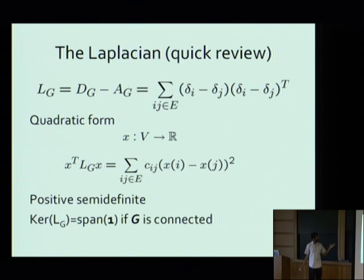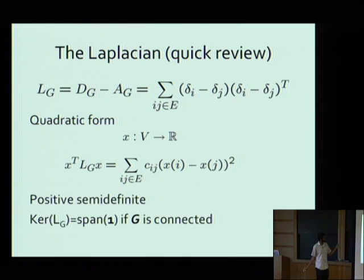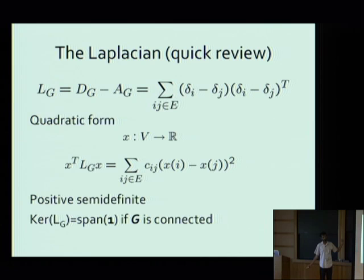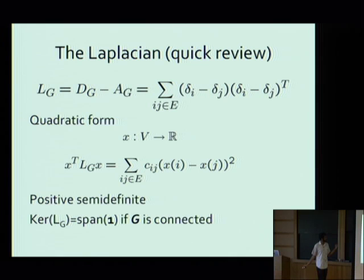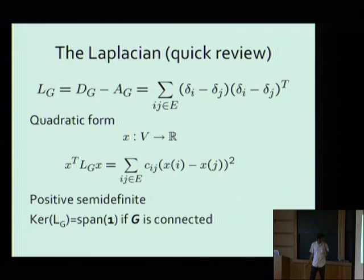To describe the notion of sparsification we consider in this work, I'll introduce the graph Laplacian. The Laplacian L is an n-by-n symmetric matrix whose rows and columns are indexed by the vertices. It's given by D minus A, where D is the diagonal matrix of degrees and A is the adjacency matrix. It can also be written as the sum over edges i,j of outer products (delta_i minus delta_j)(delta_i minus delta_j)^T. The quadratic form x^T L x is the sum of (x_i minus x_j)^2 over edges i,j, possibly weighted by c_{ij}.